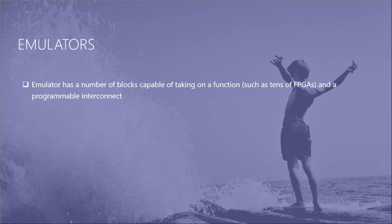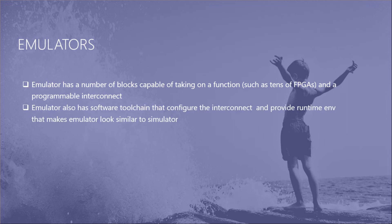FPGAs are usually faster, but the emulator need not use FPGAs. If we are designing a microprocessor targeting a 5 nanometer technology node, we could implement it in a mature technology node processor as well. The emulator also has a software tool chain that configures the interconnect and provides a runtime environment, making the emulator look almost like a simulator, and ensuring it matches the exact functionality of the RTL design.